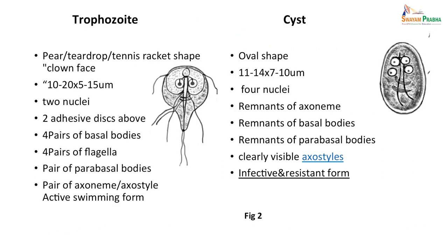It has two morphological forms in its life cycle: the trophozoite and the cyst. The trophozoite is a pear- or tennis-racket-shaped, clown-faced structure, while the cyst is an oval-shaped structure. The trophozoite is 10–25 by 5–15 microns, while the cyst is smaller at 11–14 by 7–10 microns. The trophozoite has two nuclei with condensed chromatin in the centre, giving it a clown-eye appearance, while the cyst has four nuclei. The trophozoite has two adhesive discs, four pairs of basal bodies, and four pairs of flagella, whereas the cyst has no flagella, only remnants of the axoneme, basal bodies, and parabasal bodies.